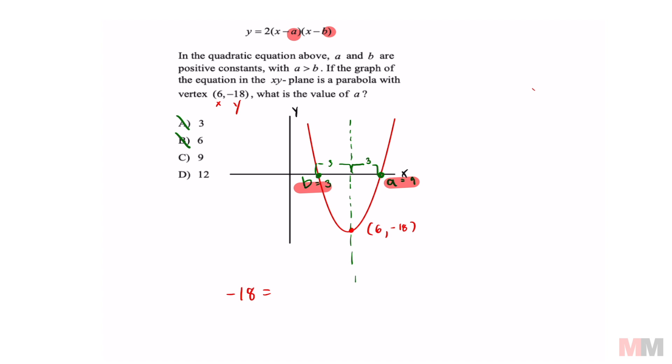That's going to get me negative 18 equals 2 times 6 minus a, which we're testing 9, times 6 minus 3. See if that's a true statement.